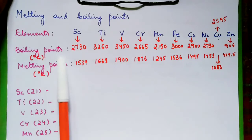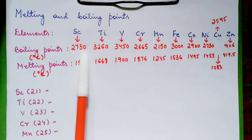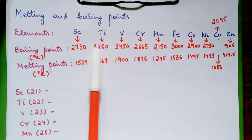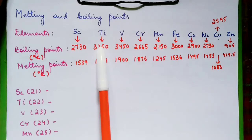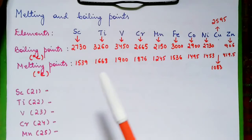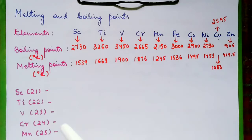Have a look at the boiling points. We see that the boiling points do not increase accordingly. Titanium has a higher boiling point than scandium, and then vanadium higher than titanium, and so on. This can be explained on the basis of the maximum number of unpaired electrons.